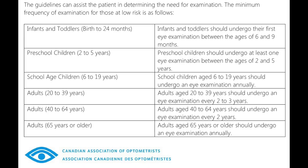Myopia will typically first occur in young children, which is one reason why kids should have annual eye exams starting at least by age three. Myopia often increases during those critical pre-teen and teenage years. The younger a child is when they first become myopic, the higher their prescription will be as an adult.